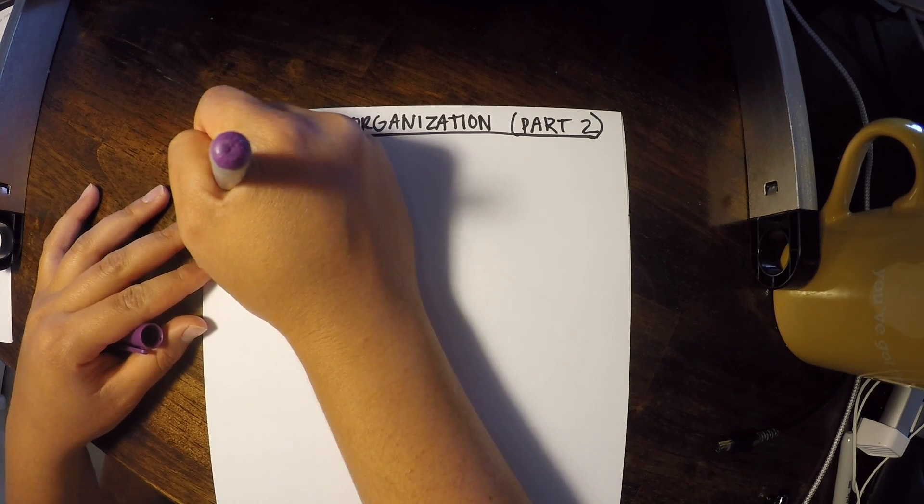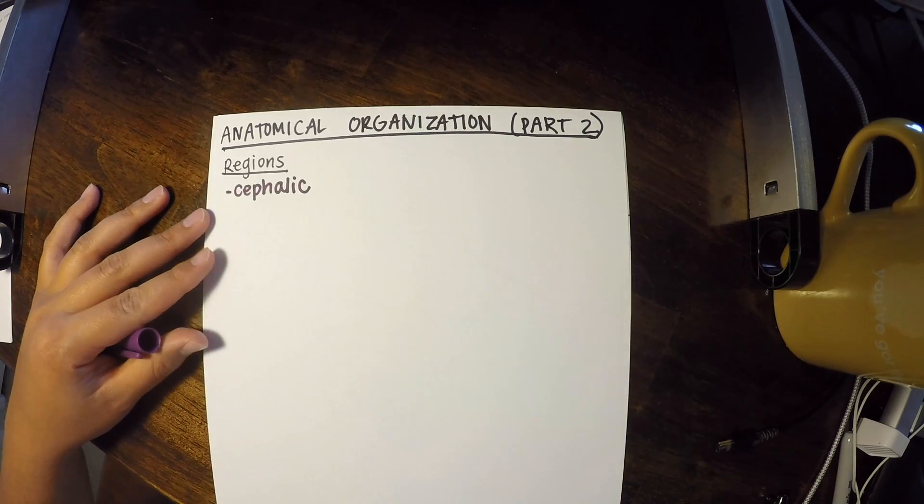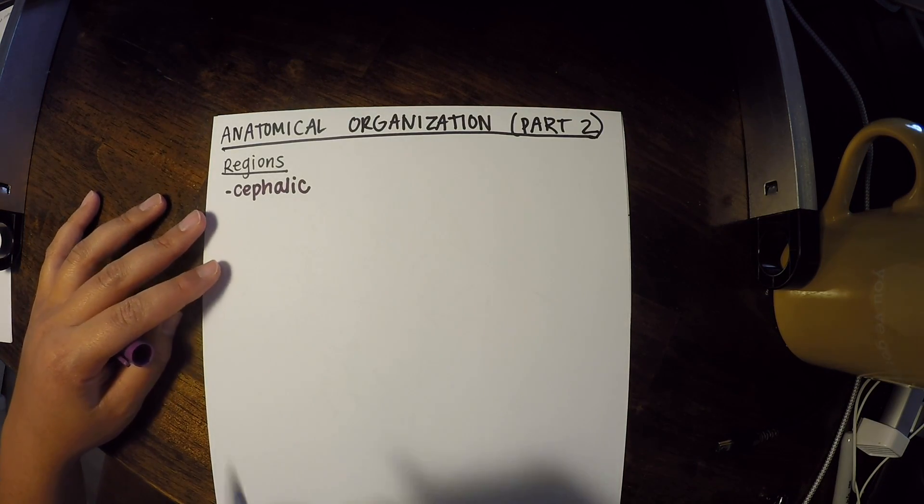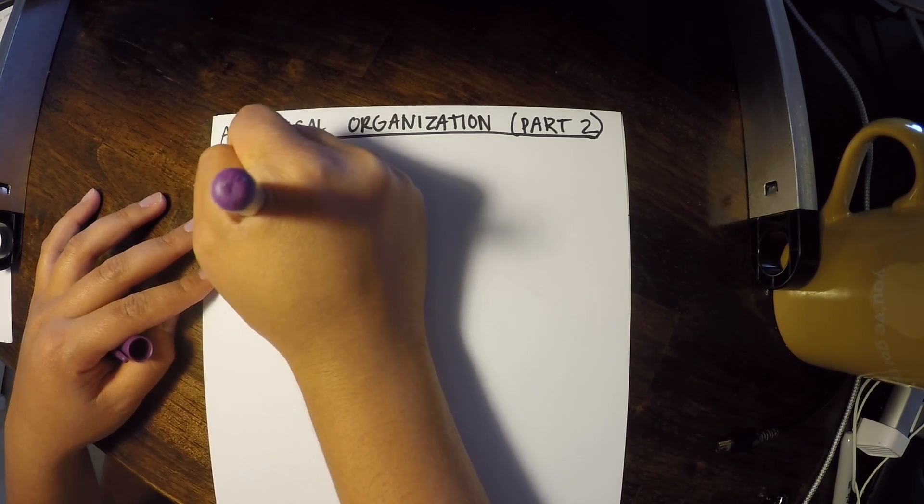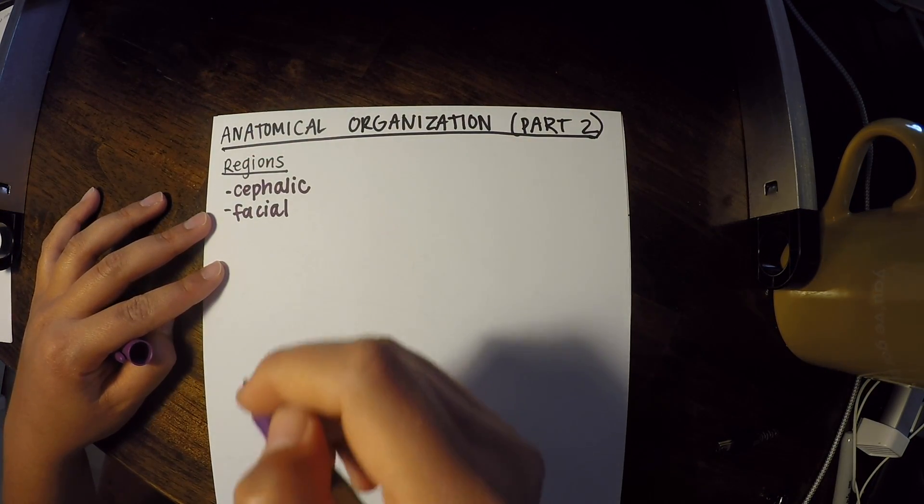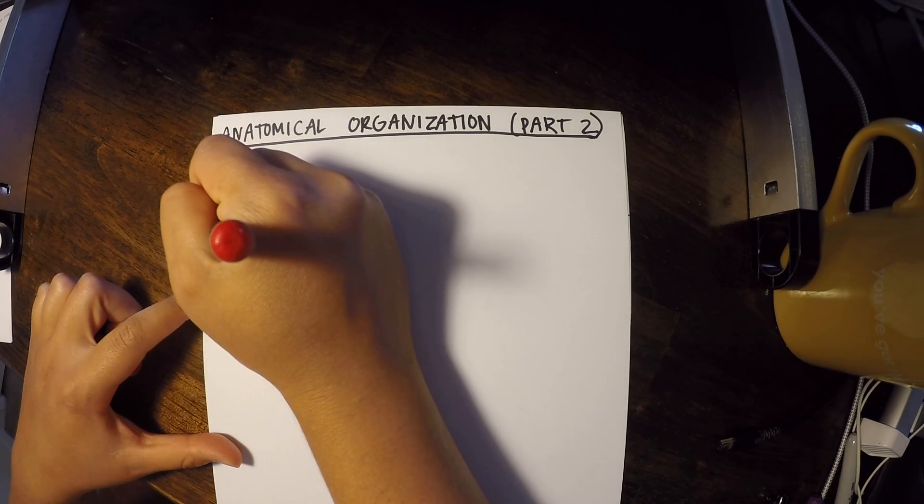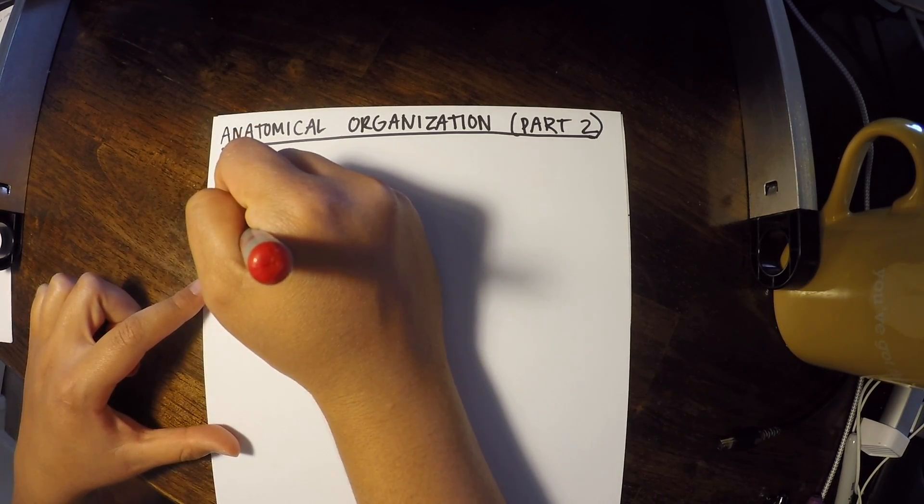The first region is cephalic, which just means head. Facial refers to the face. I'm going to kind of change colors based on what we're learning to help you follow along. The next one is cervical, which means neck.